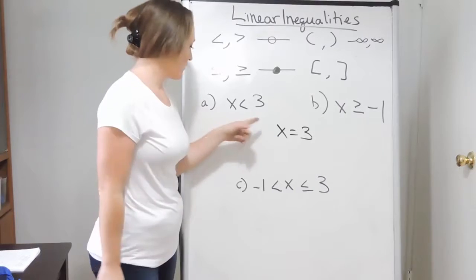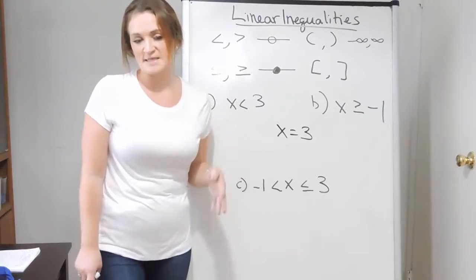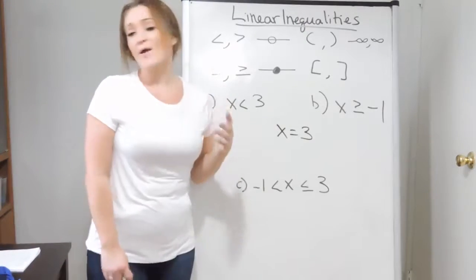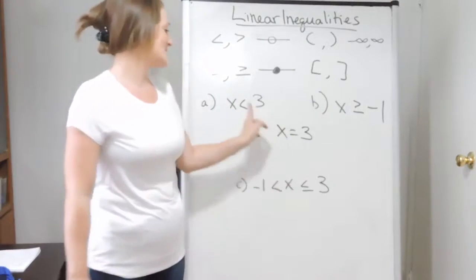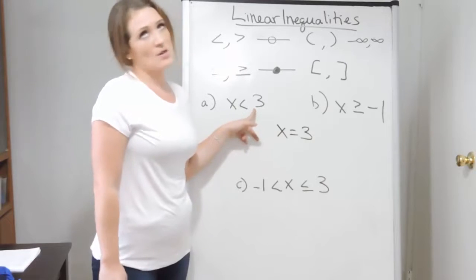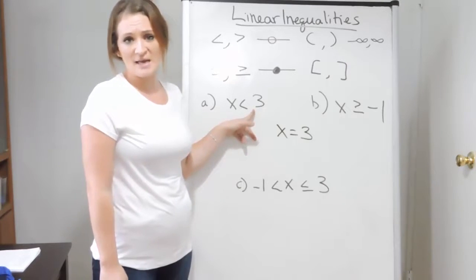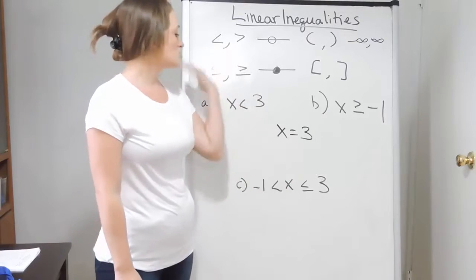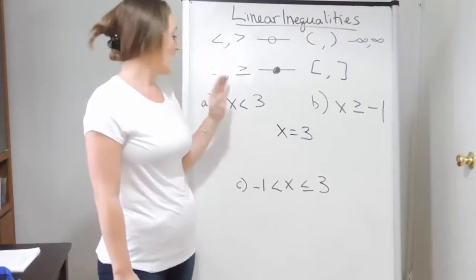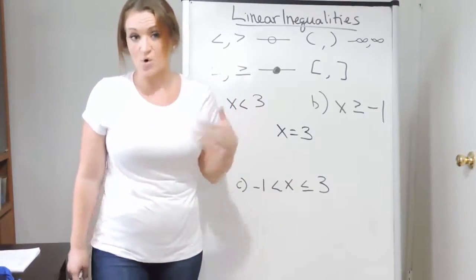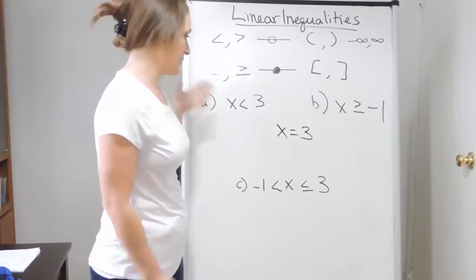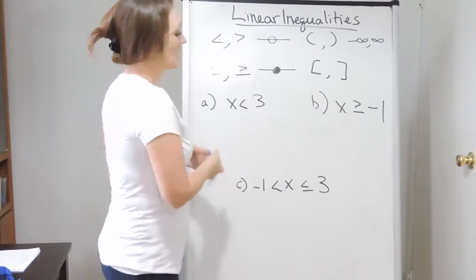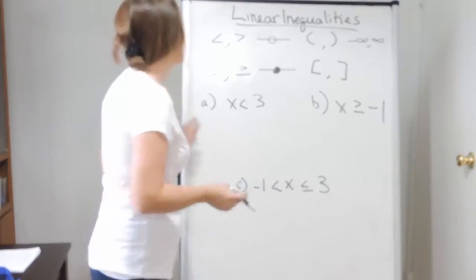For example, example A here says x is less than negative three, and that's our solution. That means our answer is anything that's less than three — 2.99999, zero, negative 10. There are so many different possibilities. As long as it's less than three, it'll work. We're no longer talking about just one single solution; we're talking about a range of solutions, and we need to understand how to note that.